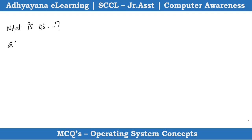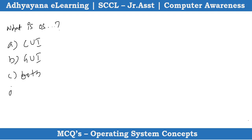We will talk about CUI and GUI. The question is: What is an operating system? Options include CUI, GUI, both, or none.